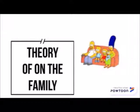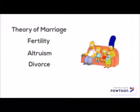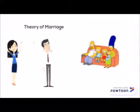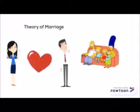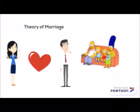The last famous theory by Becker is the theory on the family. This theory is separated into four parts: the theory of marriage, fertility, altruism, and divorce. In the theory of marriage, it is stated that reproducing and raising children are central commodities that marriage facilitates, and the partner with the highest market wage is most likely to engage.